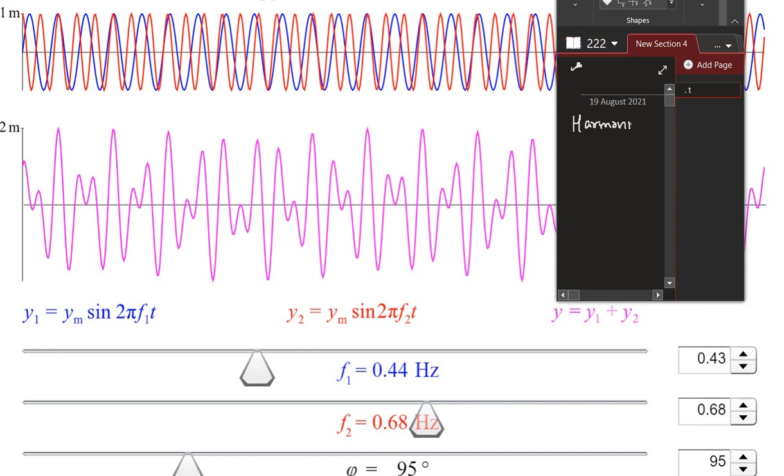Harmonic oscillations means the oscillations which we can represent by using some functions which repeat themselves identically after one period of time. For example, sine functions and cosine functions. So they represent the harmonic oscillations.